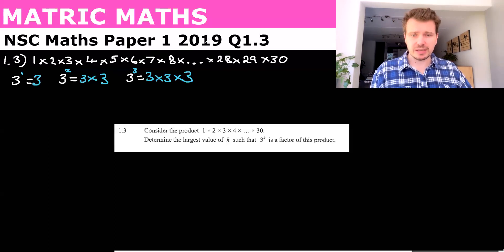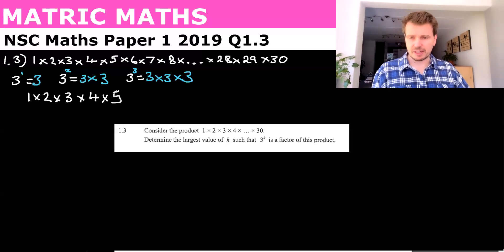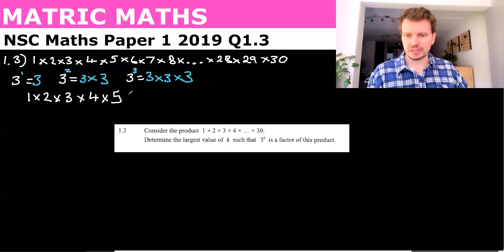So let's say that the question was 1 times 2 times 3 times 4 times 5. It wasn't all the way up to 30. What are the factors of this number? If you multiply this, 1 times 2 is 2 times 3 is 6 times 4 is 24 times 5 is 120.